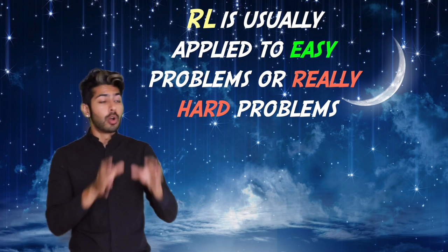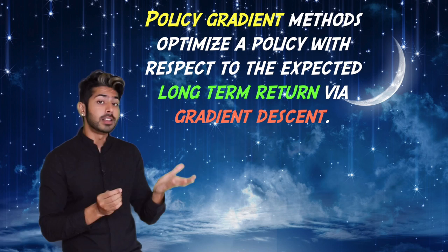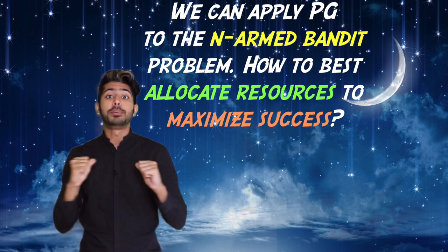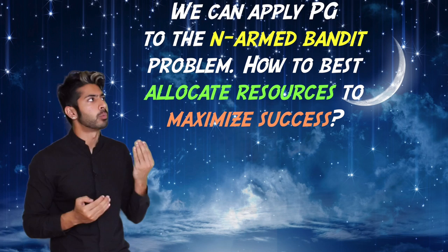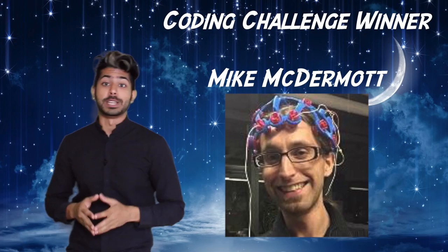So let's go over what we've learned. Reinforcement learning is usually applied to toy problems or really complex problems. Policy gradient methods are a type of RL technique that optimizes a policy with respect to the expected long-term return using gradient descent. And we can apply this strategy to the popular multi-armed bandit problem, which asks how to best allocate resources to maximize success.